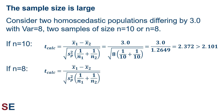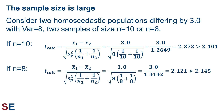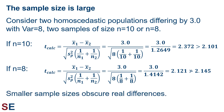Now let's look at when our sample sizes are 8. Plugging everything in gives a value of 2.121, which is not larger than the critical value of 2.145 used for 14 degrees of freedom with an alpha value of 0.025. We would fail to reject the null hypothesis of equal population means, even though they're actually different by 3. Smaller sample sizes obscure our ability to detect real differences.